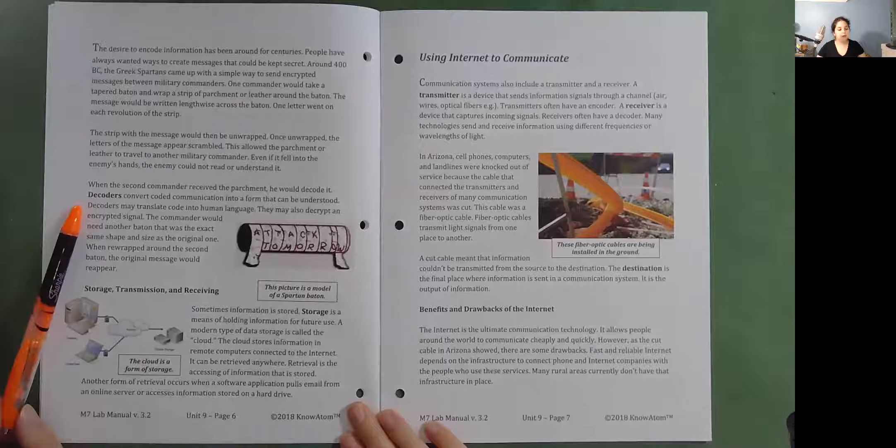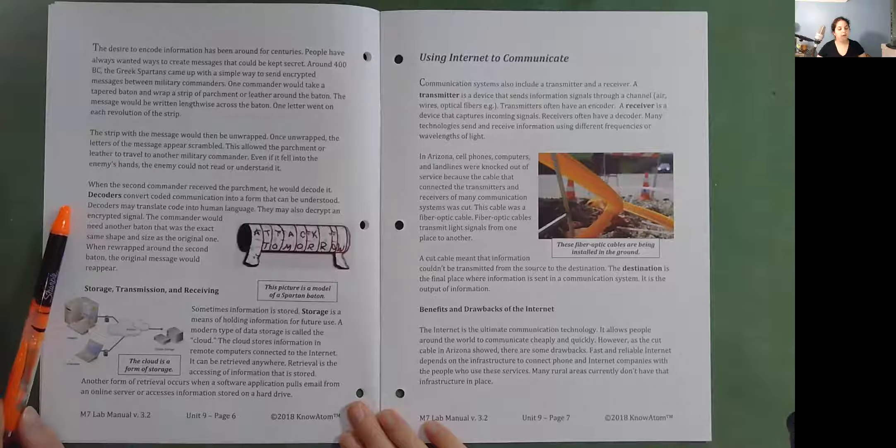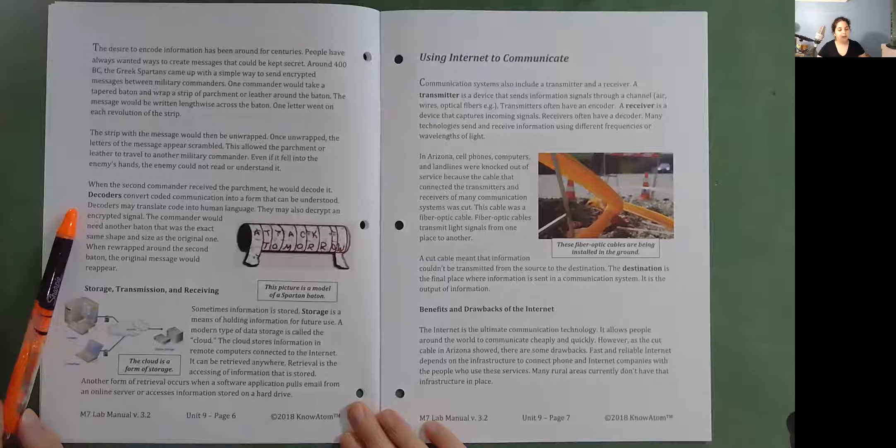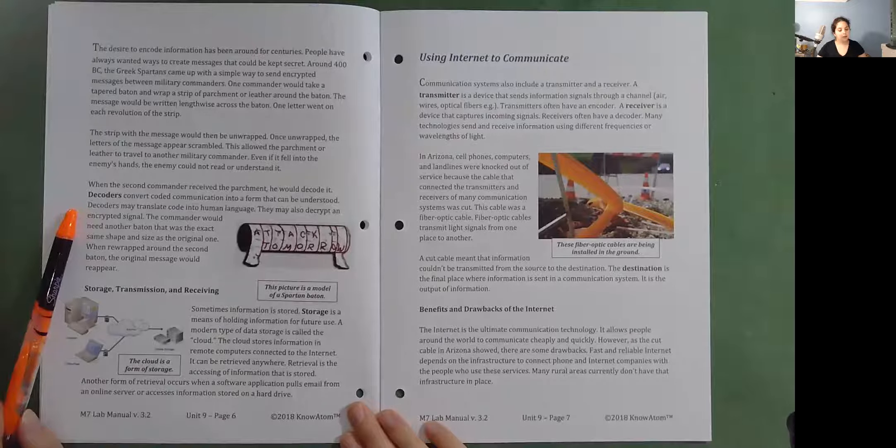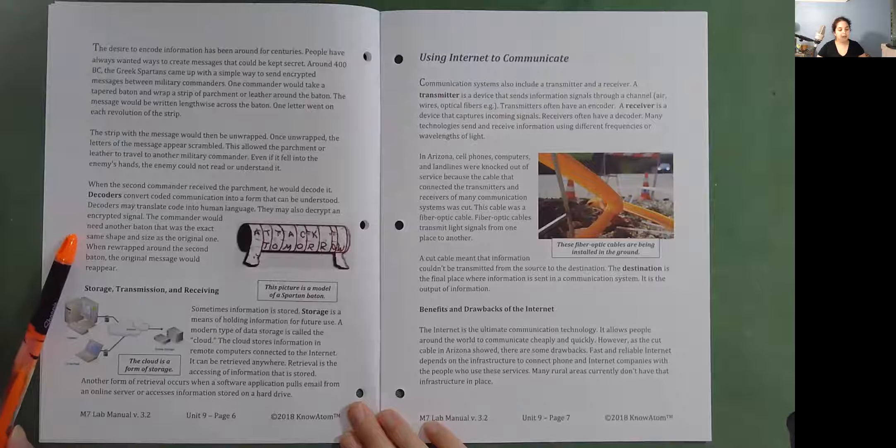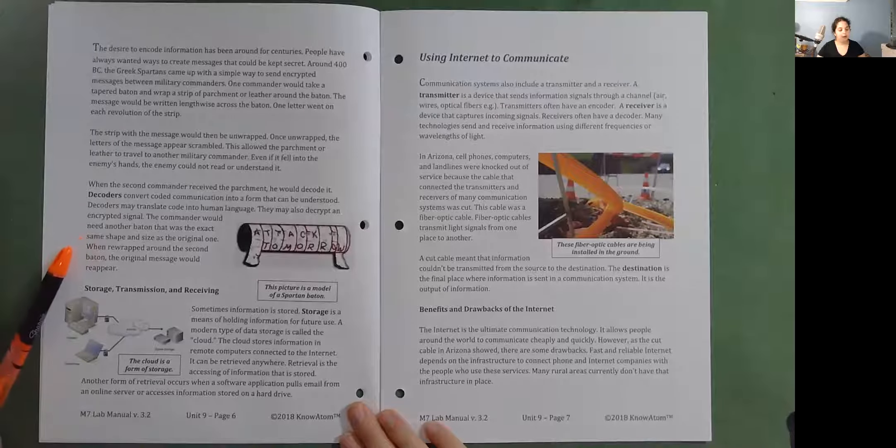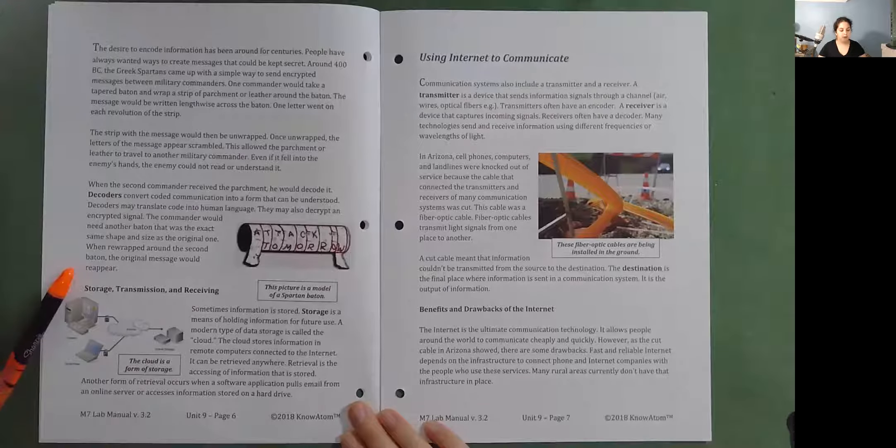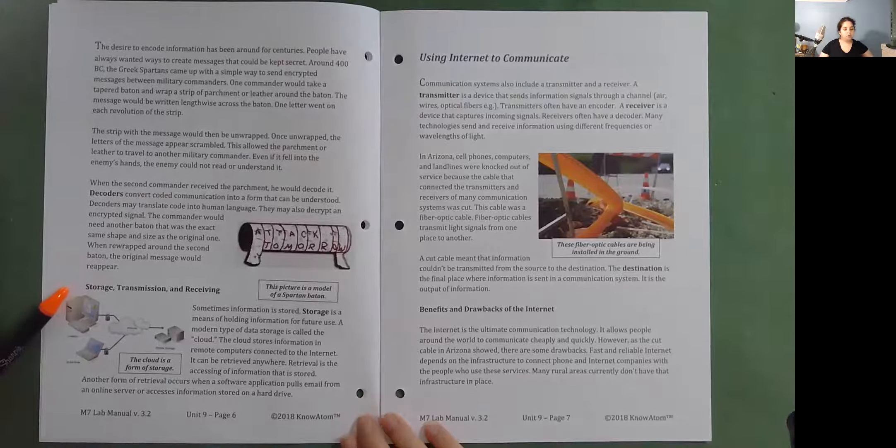Decoders convert coded communication into a form that can be understood. Decoders may translate code into human language. They may also decrypt an encrypted signal. The commander would need another baton that was the exact same shape and size as the original one. When rewrapped around the second baton, the original message would reappear.